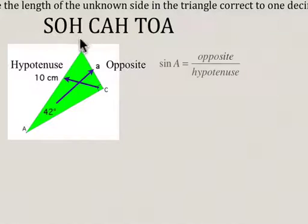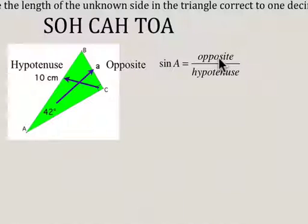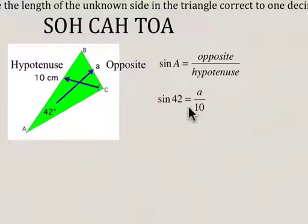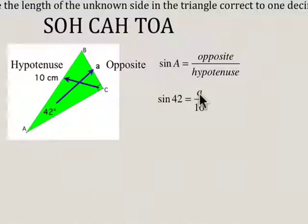So we're going to use the fact that sine is opposite over hypotenuse — sine A equals the opposite side length divided by the hypotenuse side length. The value of angle A is given as 42 degrees, so we sub in 42 for A. We don't know the opposite side — that's what we're looking for — and the hypotenuse is 10.